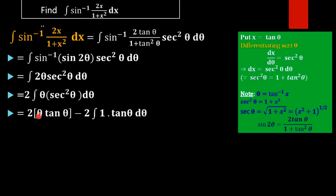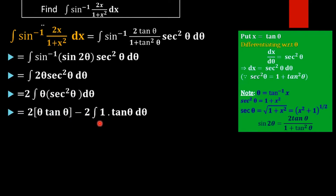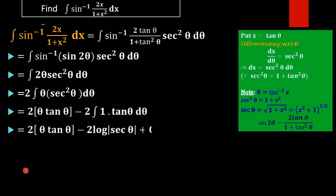Applying integration by parts: the integral of θ · sec²θ dθ equals θ · tan θ minus the integral of 1 · tan θ dθ. The integral of tan θ is log|sec θ|. So the result is 2[θ · tan θ − log|sec θ|] + C.